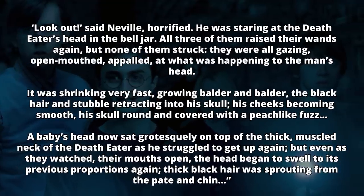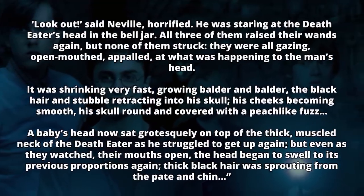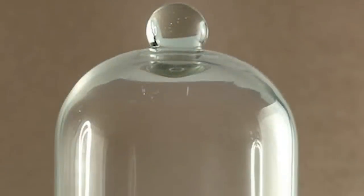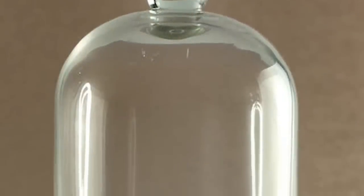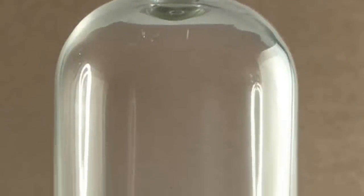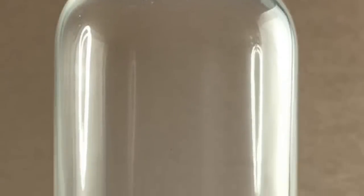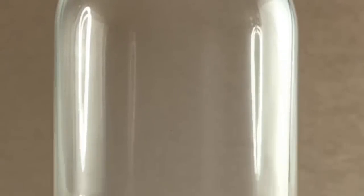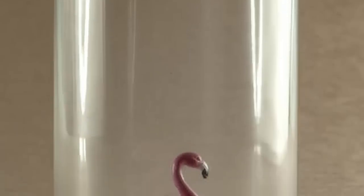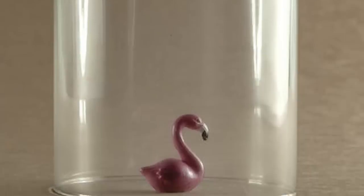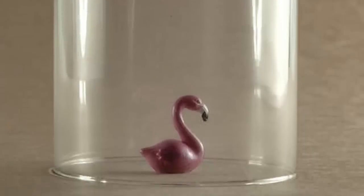Thick black hair was sprouting from the pate and chin. In theory, if you were to get your entire body into the jar, you'd regress to being a child, and presumably gain the years back. However, this would not be useful unless you'd be able to preserve your adult memories in the process. Nonetheless, this is a way of achieving immortality.